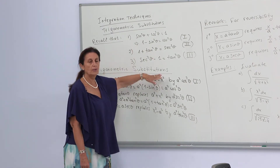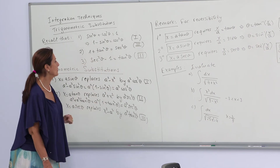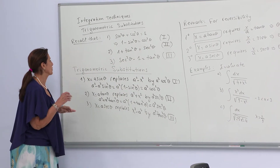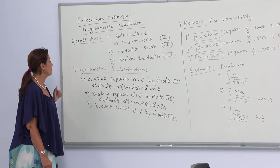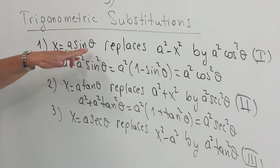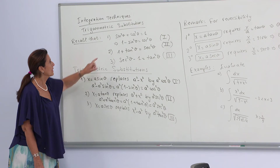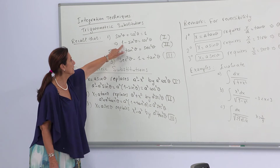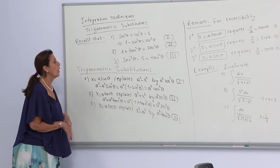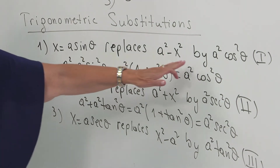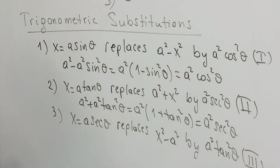For trigonometric substitution we will use three types of substitution. The substitution x = a sinθ replaces a² − x². Instead of 1, here we have a — just a constant. This replacement ends up with a² cos²θ.